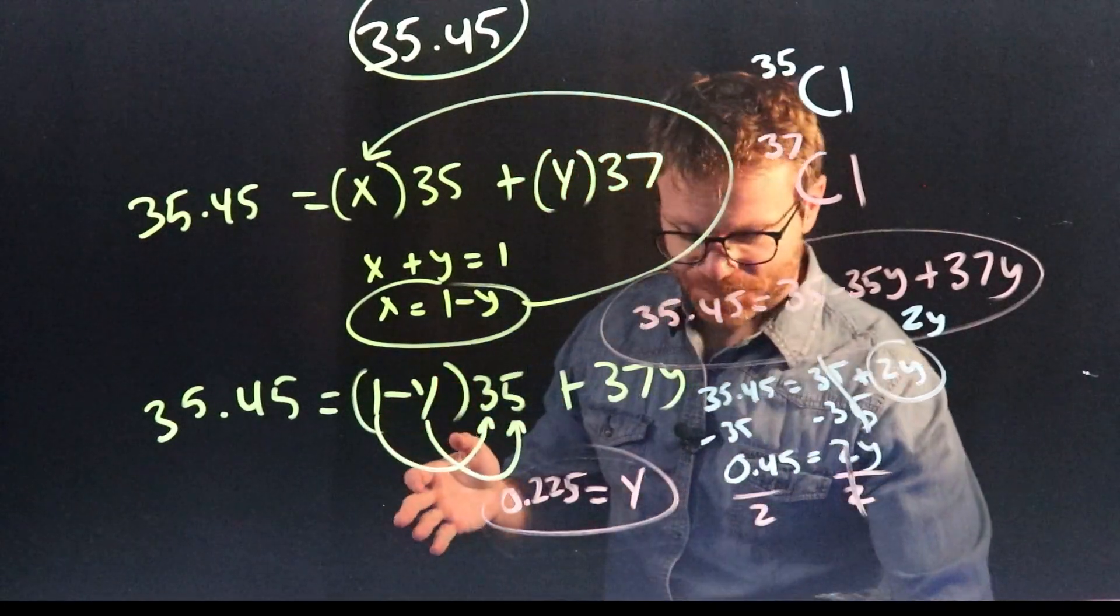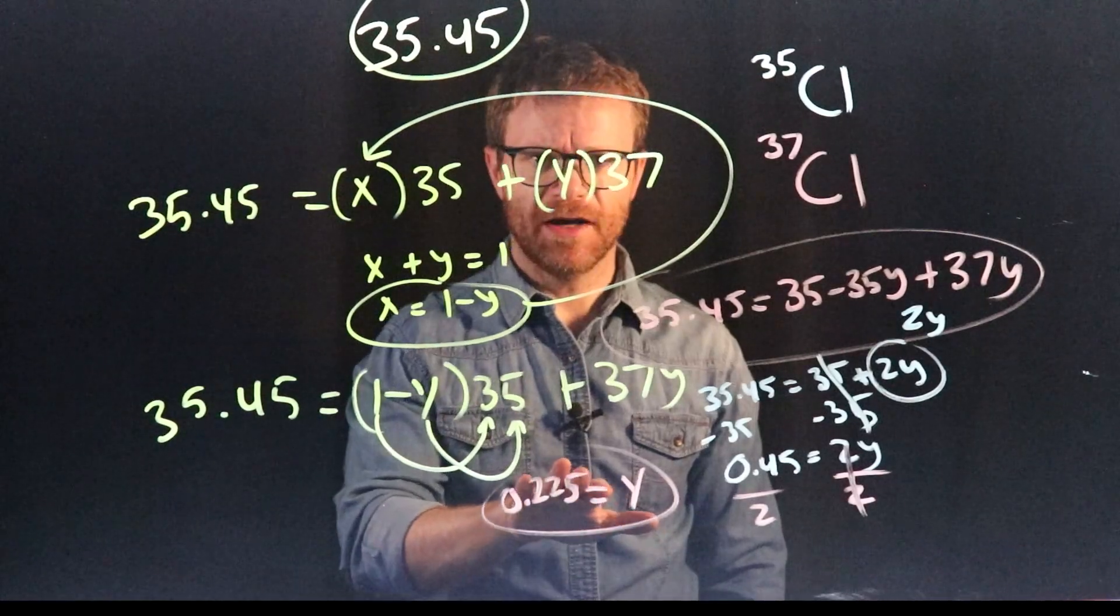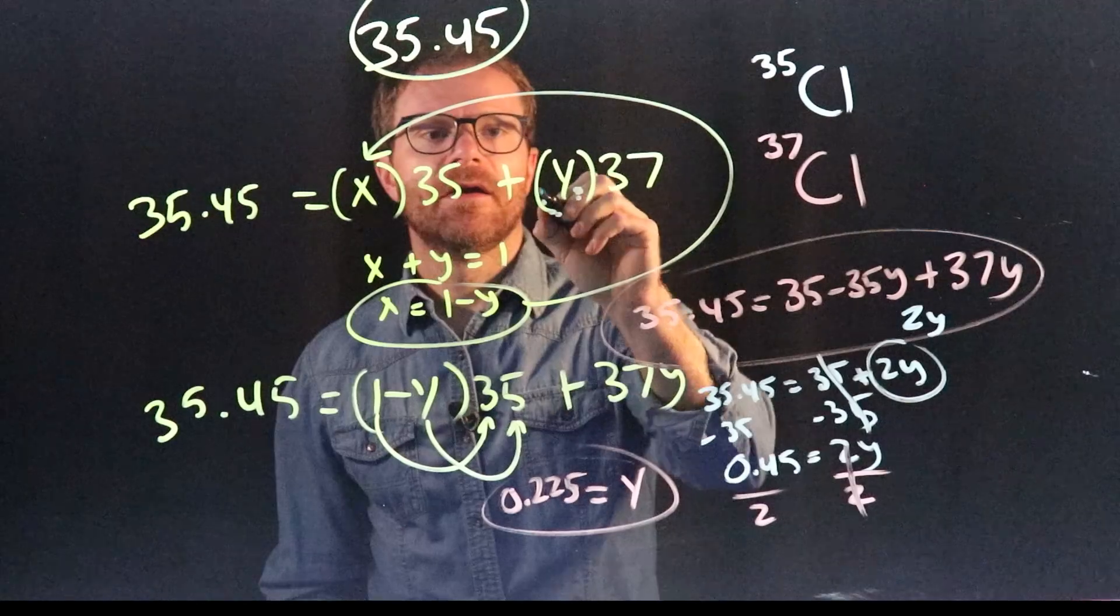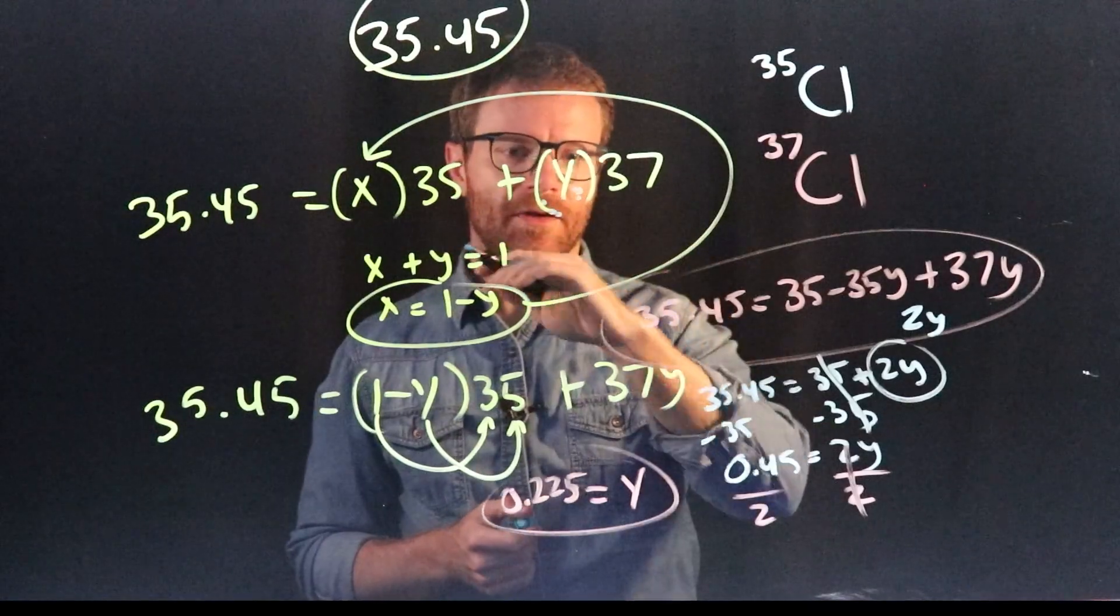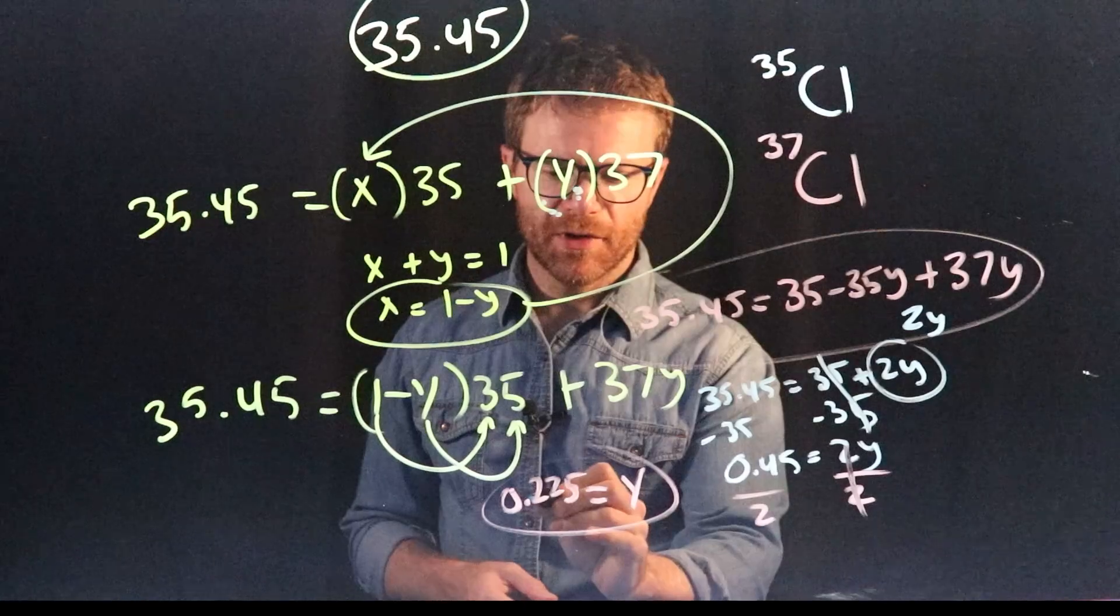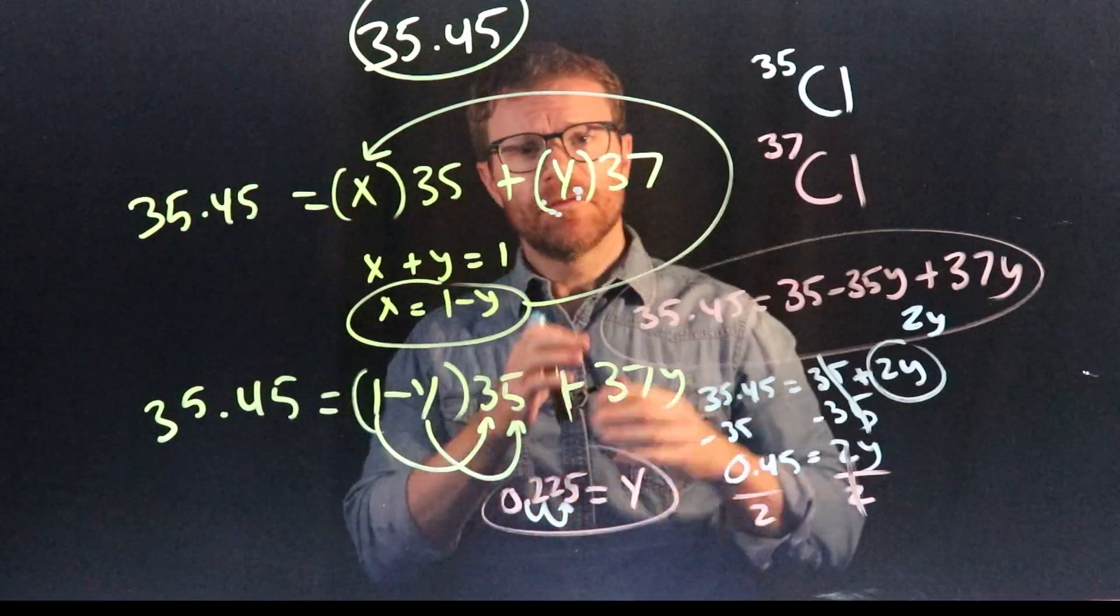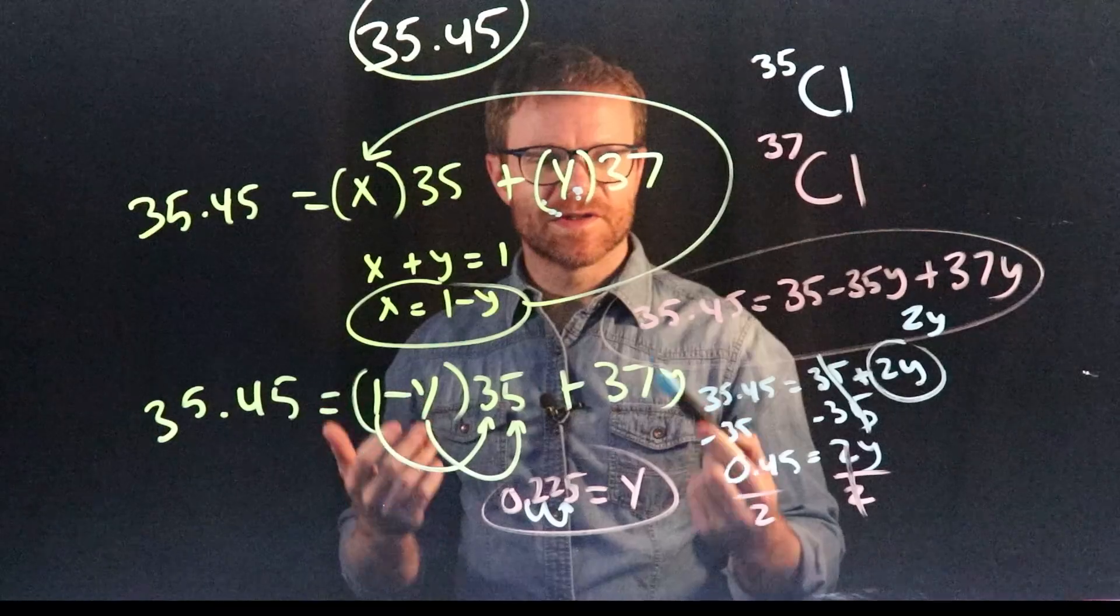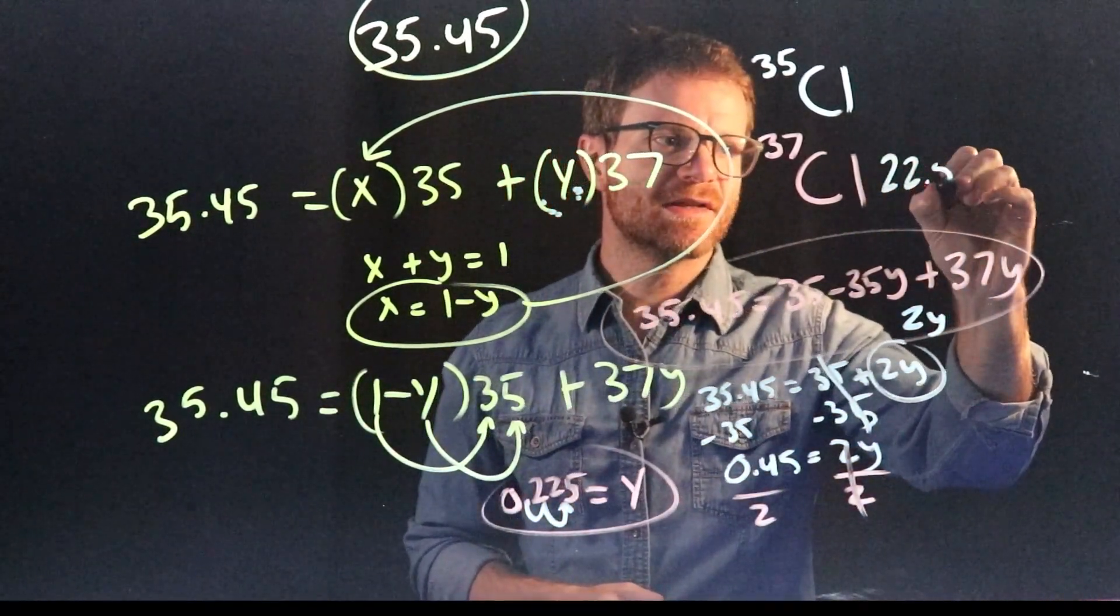That was a lot of algebra. And at the end of all that, we still don't really have our answer. We just have this 0.225 is Y. Now, what is Y? Well, Y is up here. And that is the percentage as a decimal of chlorine 37, right? And so if it's a decimal, in order to put it into percentage form, we need to move the decimal place twice. We need to multiply it by 100, right? 50% is the same as 0.5, and 0.225 is the same as 22.5%. So that's how much chlorine 37 there is.